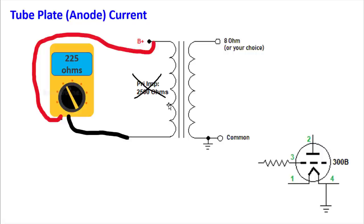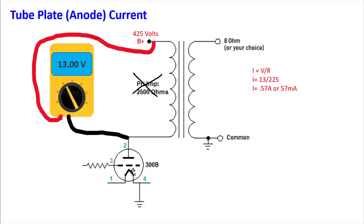Then put the tube back in, power the unit up, and let it warm up. Measure the voltage dropped across the transformer primary — from one side to the other, which is also the plate of this tube. We measured 13 volts. It doesn't matter if your meter shows negative or positive 13 volts — it's just lead polarity. Using I = V/R: 13 volts divided by 225 ohms gives 57 milliamps of current flowing through this tube. We just learned how to measure a fixed-bias tube.